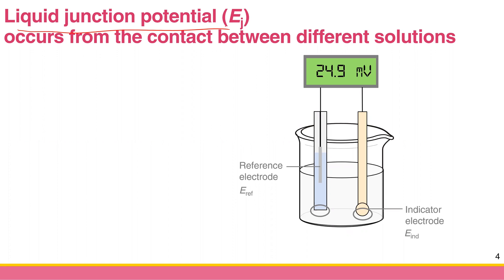If you have contact between two different solutions, for example, you have the sample solution here, you have the indicator electrode which may have some solution here, and you have the reference electrode with some solution here — you're going to have at least two junction potentials, shown as the gray ellipses here. This is our liquid junction.